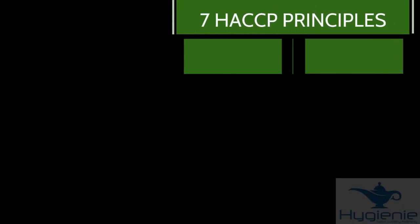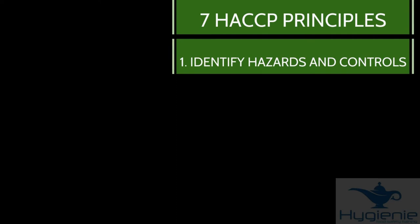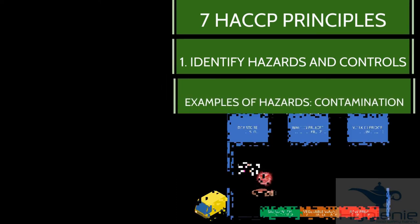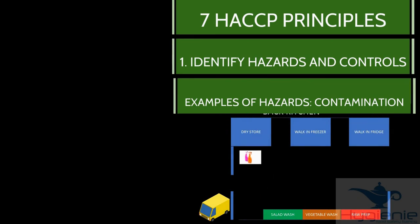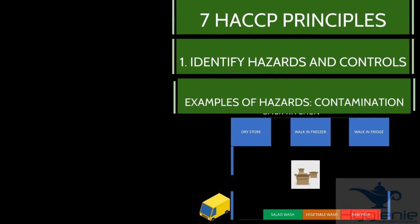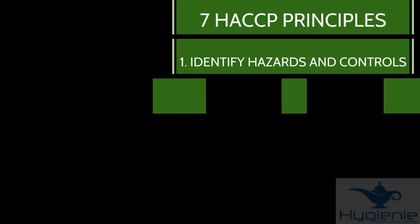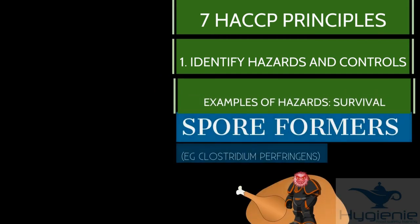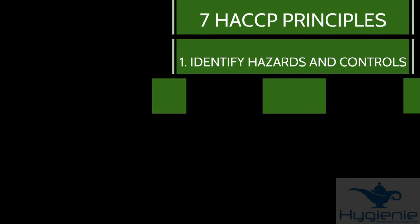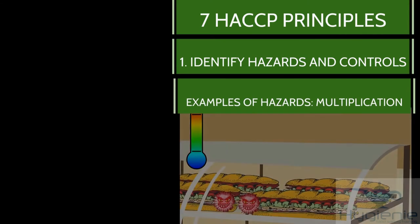Step one is identify hazards and controls. Hazards could be contamination, such as microbiological, chemical, physical or allergenic. Hazards could be survival, for example surviving high temperatures. And hazards could be multiplication, bacteria multiplying and growing.